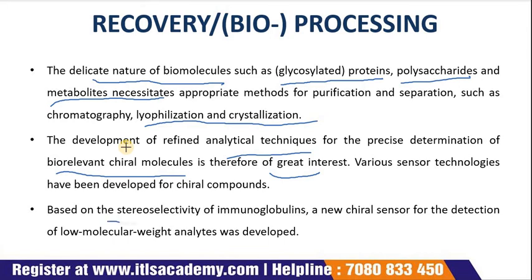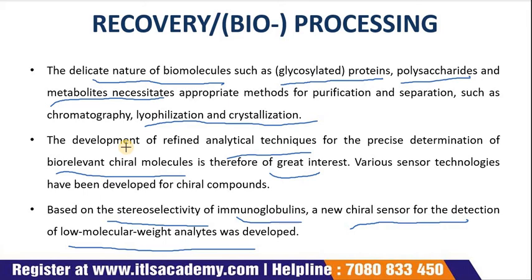Based on the stereoselectivity of immunoglobulins, new chiral sensors for the detection of low-molecular-weight analytes were developed using surface plasmon resonance detection. In an assay format, free underivatized alpha amino acids can be monitored in a competitive assay by their interaction with antibodies specific for the chiral centers of this class of substances.